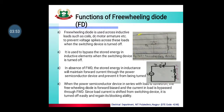Without the freewheeling diode, the SCR needs to remain on to keep releasing the stored energy until the current reaches zero. When the power semiconductor device in series with the load is turned on, the freewheeling diode is forward biased and the current in the load is bypassed through the freewheeling diode. Since the load current is shifted away from the switching device, it is turned off easily and regains its blocking ability.